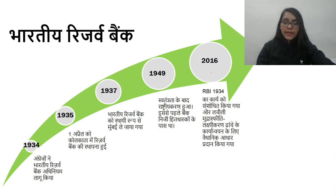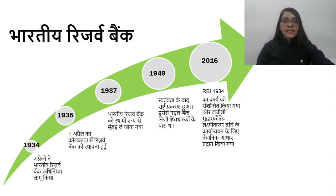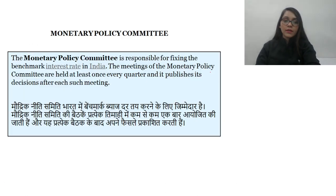So far we have covered 3 years: 1934 (RBI Act introduced), 1935 (RBI established in Kolkata), and 1937 (RBI permanently moved to Mumbai). Learning it in this slide format will make it even easier for you.